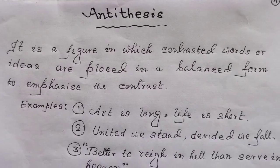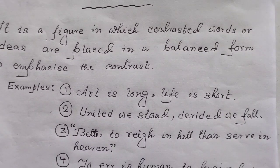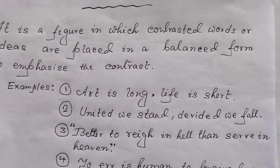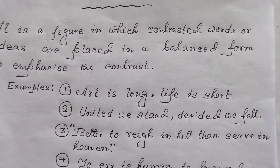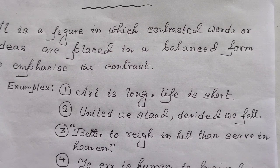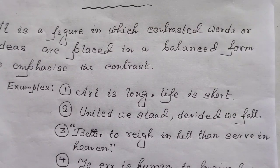United we stand. Divided we fall. In the first example, long and short are two contrasting words. In the second example, united and divided are two contrasting words. If we generally say 'united we stand,' that makes the idea clearer, but adding 'divided we fall' makes it even clearer. The two pieces of information balance each other nicely.